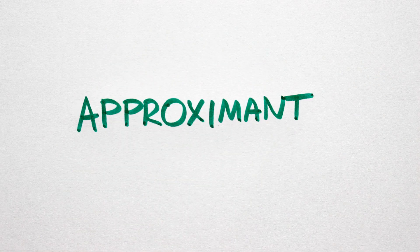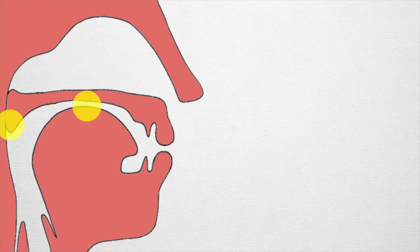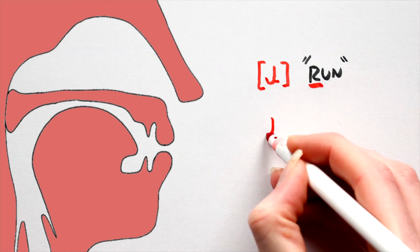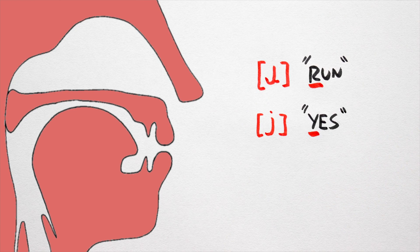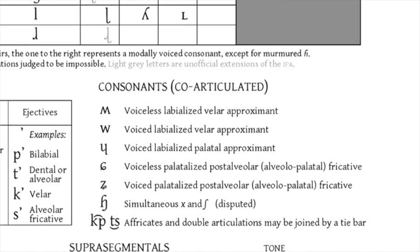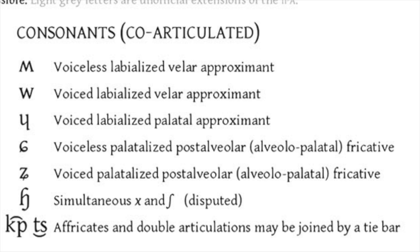Number 4: Approximants. Here the airflow is impeded only slightly. The hissing sound indicative of fricatives is no longer present, but the sound is altered to a degree. In English, we have three approximants: 'ra' as in run, 'ya' as in yes, and 'wa' as in water. Interestingly, the English W sound does not appear in this section of the IPA, because it's co-articulated, so it belongs in a separate section which we'll discuss in the near future.